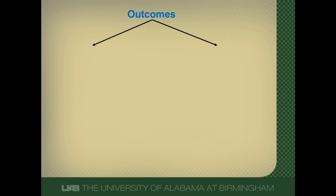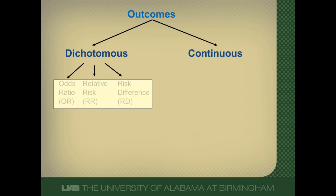So first, let's talk about the outcomes of treatment type studies, and they can be of two types. They can be dichotomous, which is yes-no outcomes, like people were dead or they were alive, or they can be continuous, which are outcomes that can occur along a continuum, something like blood pressure. Dichotomous outcomes can be summarized using odds ratios, relative risks, or risk differences, and these measures are interpreted the same way as they would be in the primary studies.